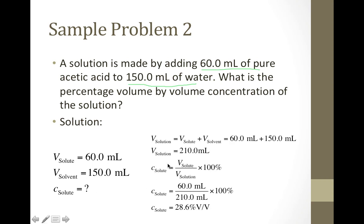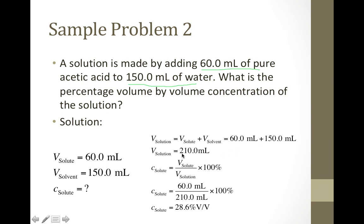Our equation for concentration is volume of solute over volume of solution times 100%. But in this question, we're not given the volume of the solution — we're given the volume of solute and solvent separately. Volume of solution equals volume of solute plus volume of solvent: 60 mL + 150 mL = 210 mL. Then we plug in: 60 mL divided by 210 mL, multiplied by 100%, to get our answer.